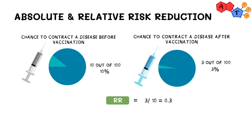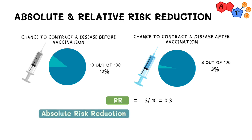We calculate absolute risk reduction by just subtracting both percentages from each other. In other words, the absolute risk was reduced by 7%, since 10% minus 3% is 7%. It stands to reason then that we can only calculate absolute risk reduction if the relative risk is less than 1, since the intervention must be protective and therefore reduces the absolute risk.